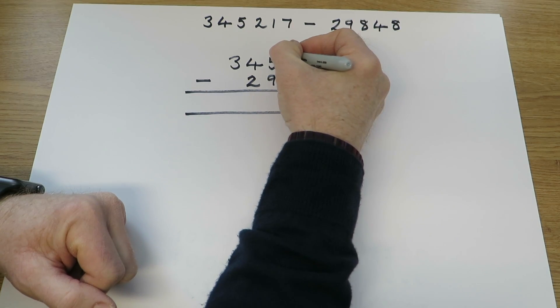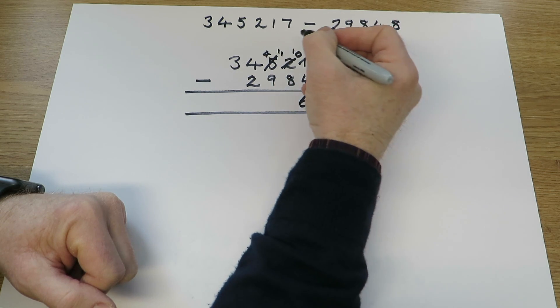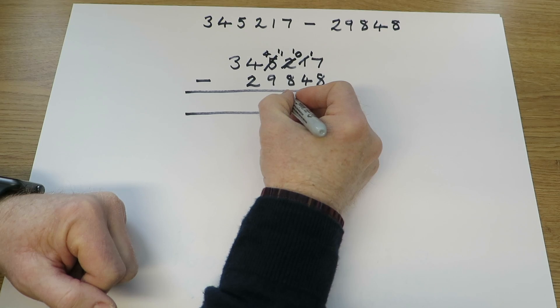We haven't got enough hundreds, so we'll use one of the thousands. Keeping 4 thousands, we've now got 11 hundreds. 11 take away 8 is 3 hundreds.